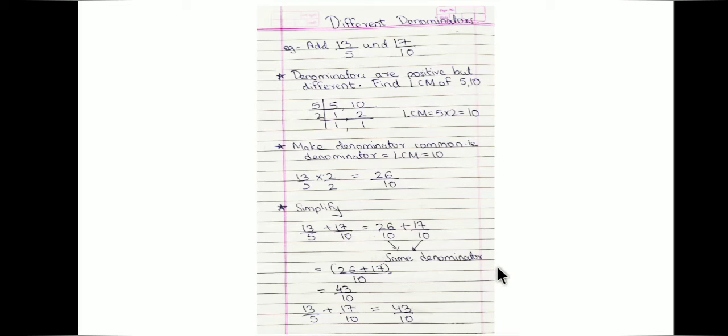So if the denominators are different and their HCF is not equal to 1 — meaning they have a common factor — in that case you find the LCM, make all the denominators common, and then add the numerator part.